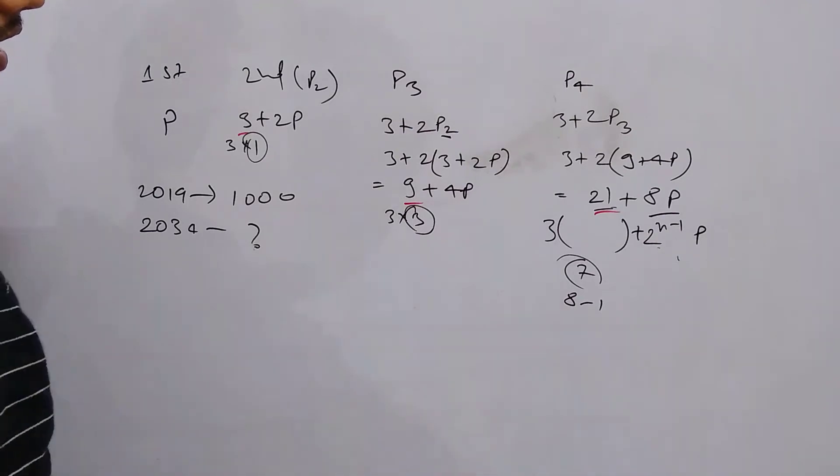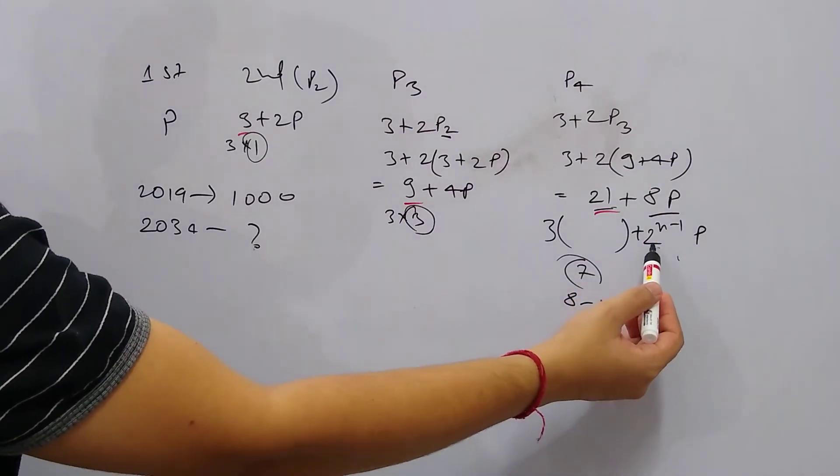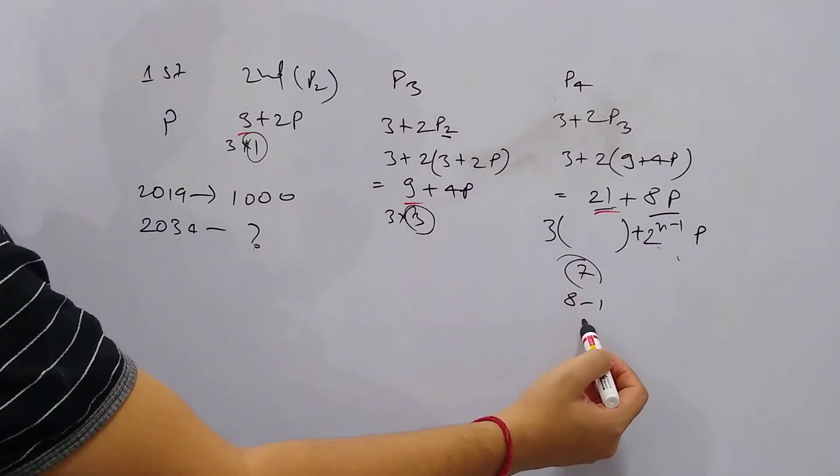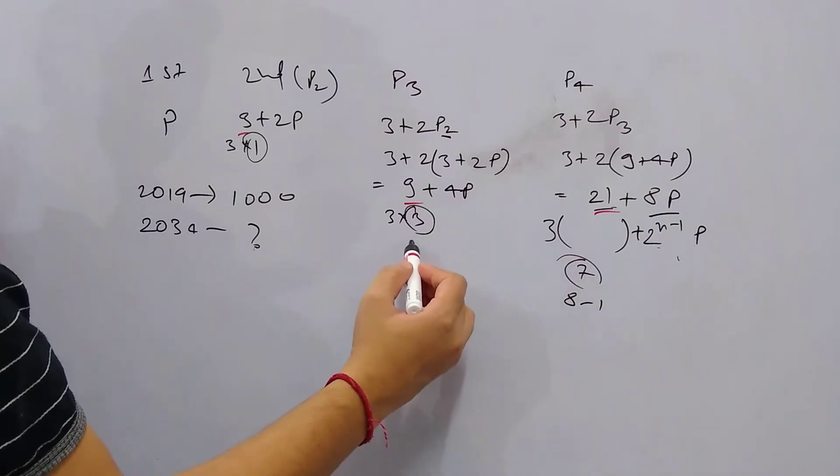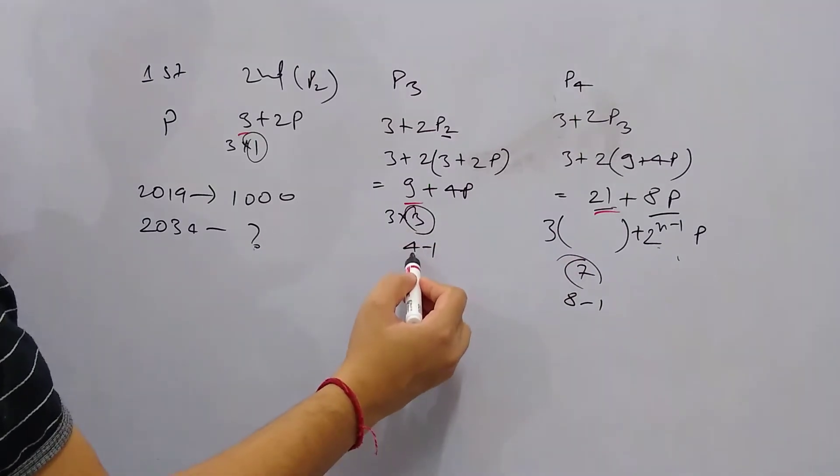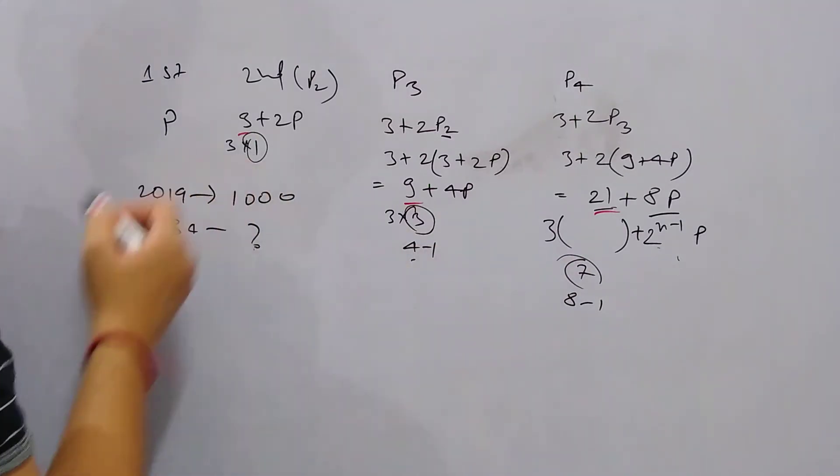Now if you try to see the pattern, it's 8 - 1, or 2³ - 1. Here also it's 4 - 1, so 2² - 1. And here it's 2⁰ - 1.